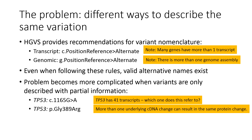This problem becomes even more complicated when variants are described using only partial information, as is often the case when evaluating older literature. If a cDNA change is described without a transcript, how can you be sure which transcript is being used? Worse, if only a protein change is described, how can you be sure of the underlying cDNA change when there may be more than one plausible option? For further overview of variant nomenclature, genome assemblies, and transcripts, please view the additional videos on these topics available on the ClinGen YouTube channel.